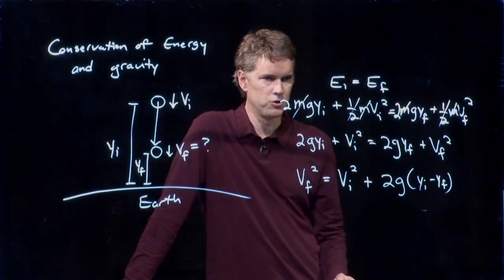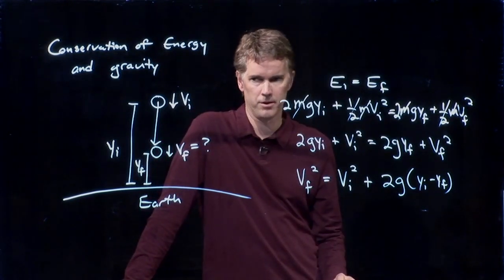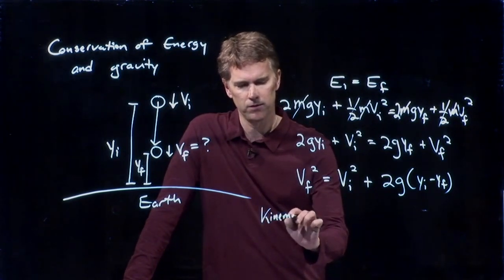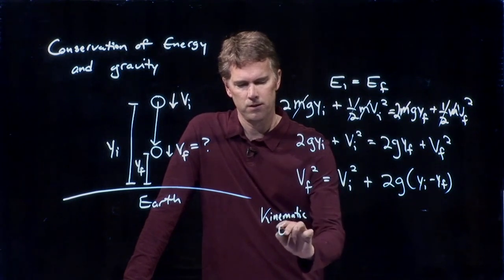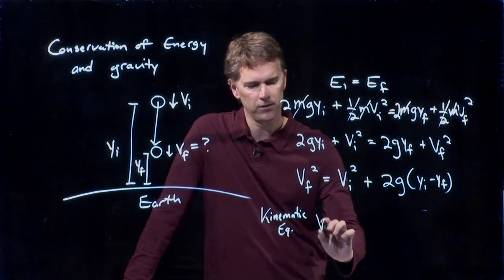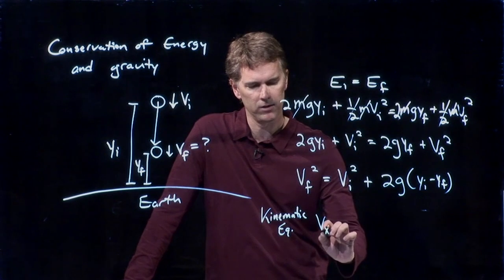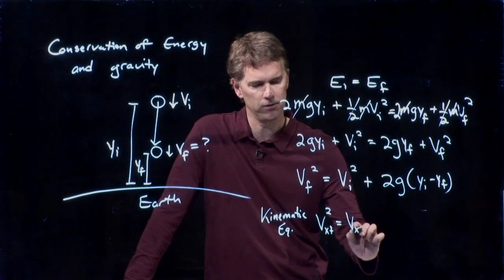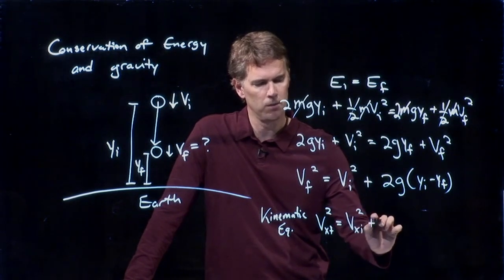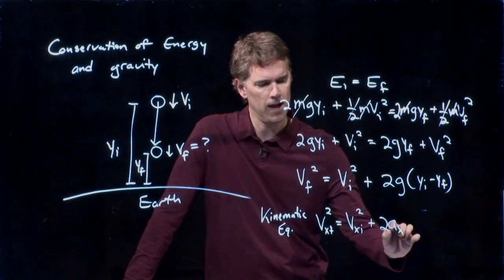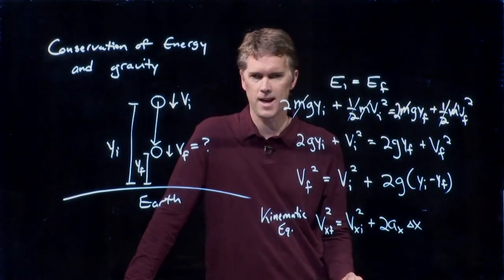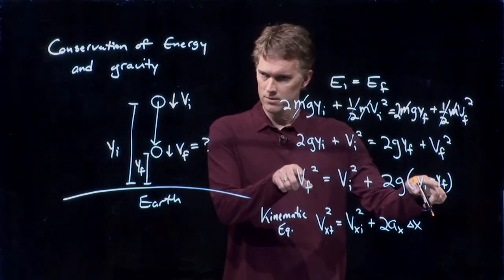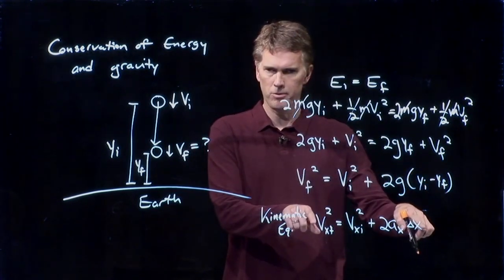And this should look really, really familiar. Remember one of those kinematic equations? It looked like this. V_x final squared equals v_x initial squared plus 2a_x times delta x. It's the exact same equation. It's exactly the same as we had before.